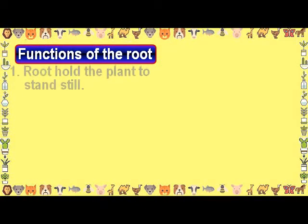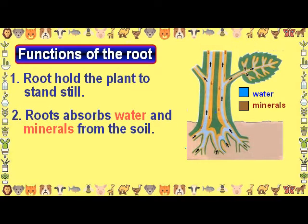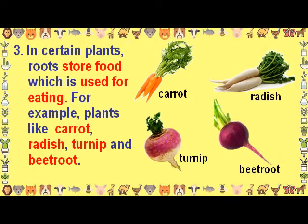Functions of the root: Roots hold the plant to stand still. Roots absorb water and minerals from the soil. In certain plants, roots store food which is used for eating — for example, plants like carrot, radish, turnip, and beetroot.